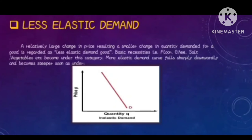The second kind is less elastic demand: a relatively large change in price results in only a small change in quantity demanded. Basic necessities — for example, flour, ghee, salt, vegetables — fall under this category. The less elastic demand curve falls sharply downward and becomes steeper. As shown in the graph, as the price of ghee per kg decreases, the quantity demanded of that product also decreases only slightly.